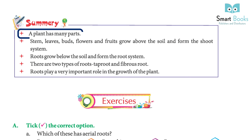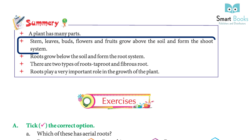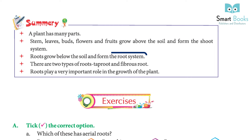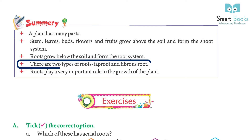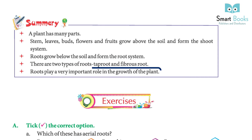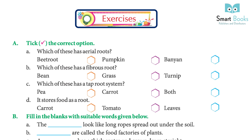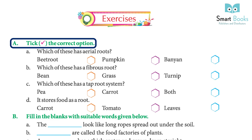Summary: a plant has many parts. Stem, leaves, buds, flowers, and fruit grow above the soil and form the shoot system. Roots grow below the soil and form the root system. There are two types of roots: taproot and fibrous root. Roots play a very important role in the growth of the plant.